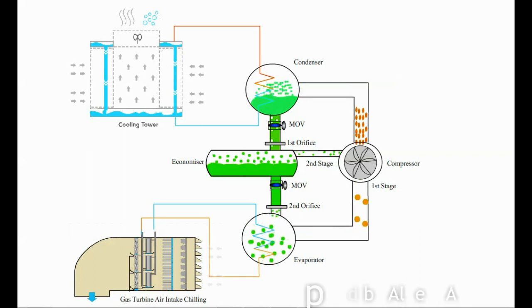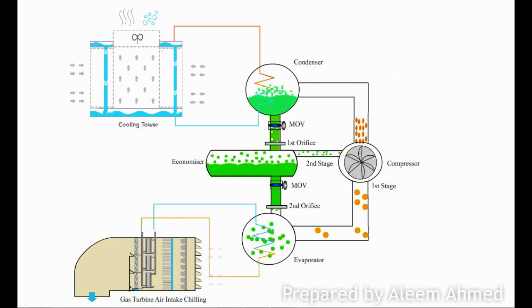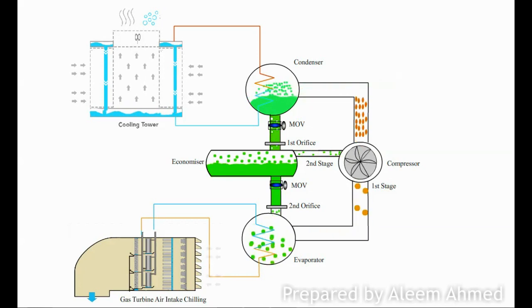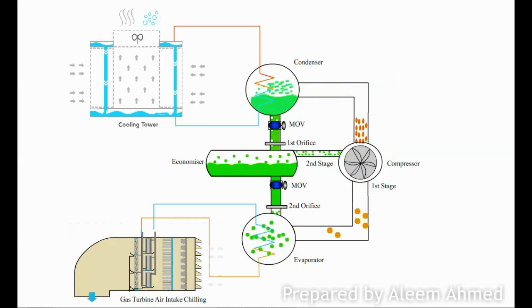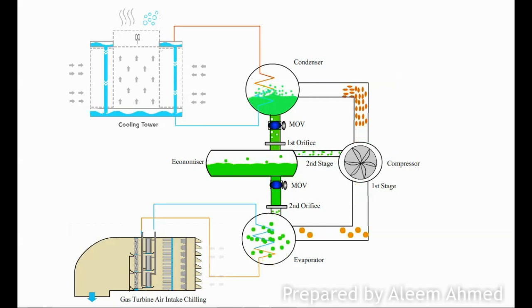This video will explain the working cycle of a two-stage centrifugal chiller for gas turbine inlet air cooling. In this system, the low temperature and low pressure gas is taken in from the evaporator, goes through a diffuser, and is discharged to the condenser as a compressed high pressure gas.